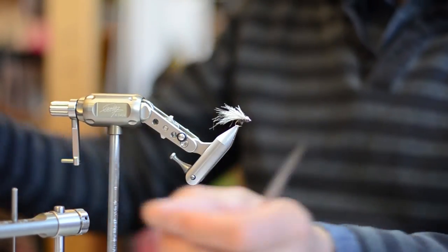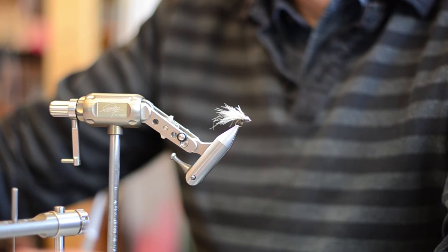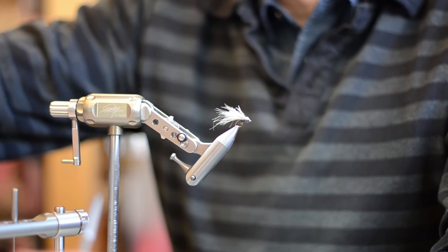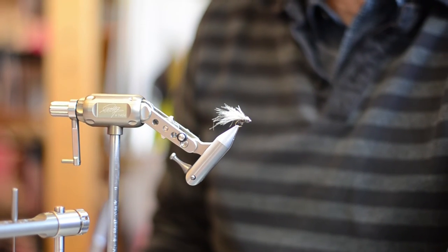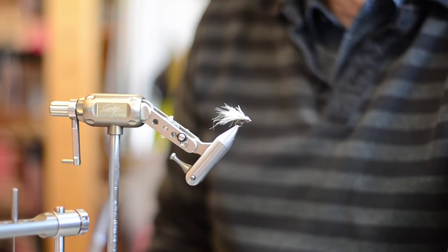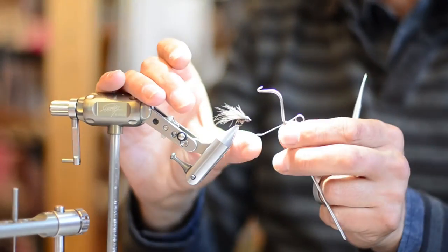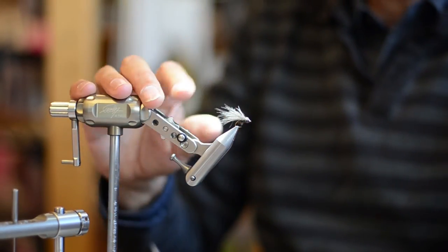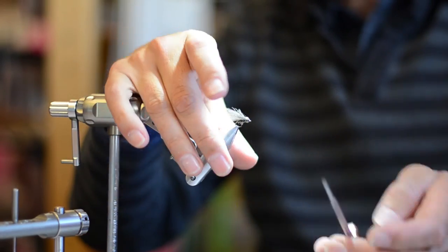When you have a hackle that stands over the hook, it's smaller so it's easier to get very precise on tiny flies. You will see maybe on the next pattern.